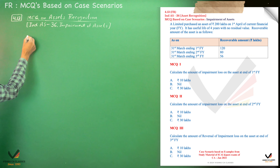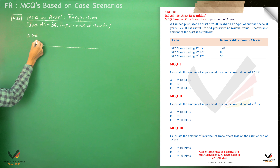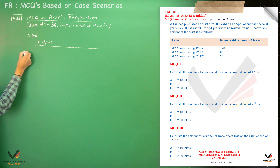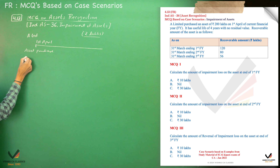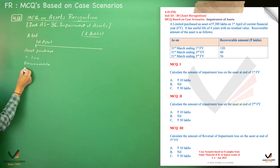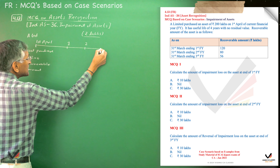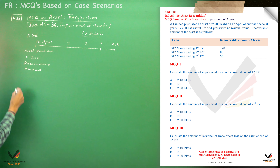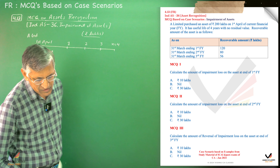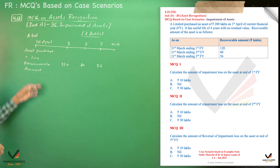So the asset is purchased for Rs. 200 lakhs on 1st April of the current financial year. The recoverable amounts mentioned are: end of first financial year, end of second financial year, end of third financial year — with a total useful life of 4 years. The recoverable amounts are Rs. 120 lakhs, Rs. 80 lakhs, and Rs. 56 lakhs.